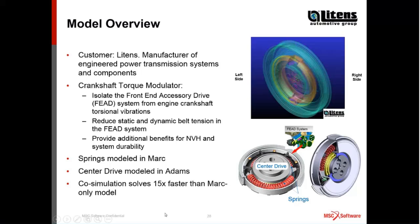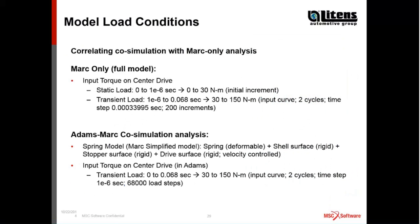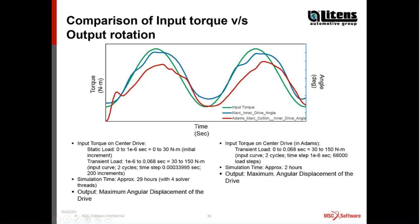What the folks at Lightens found is that they had been doing this analysis wholly in MARC, and when they switched to a co-simulation — representing the center drive and other parts of the system besides the springs in ADAMS — they found a 15x speed improvement in the overall simulation. They initially said, 'Prove to us this works; we're happy with our MARC-only results.' So we compared the ADAMS-MARC co-simulation results against their MARC-only results. The green curve is the input torque signature, the blue shows maximum angular displacement of the drive from MARC-only, and the red from the ADAMS-MARC co-simulation — showing good matching.